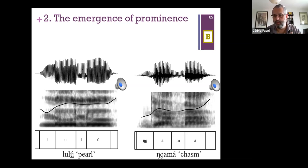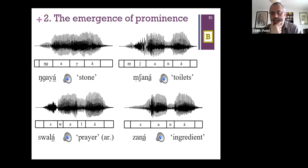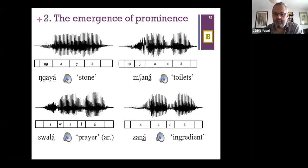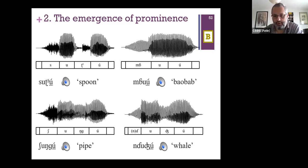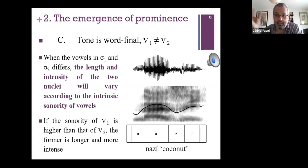When you hear 'lulu' produced by the speaker, you don't have the feeling that one vowel is more prominent than the other. What we see is that the tone doesn't only impact pitch but also other prosodic properties like length and intensity. This works consistently each time you have two identical vowels.